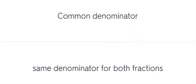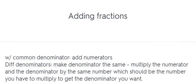Common denominator. Same denominator for both fractions. Adding fractions. With common denominator, add numerators. Divide denominators, make denominator the same. Multiply the numerator and the denominator by the same number, which should be the number you have to multiply to get the denominator you want.